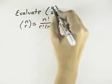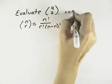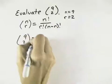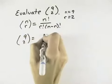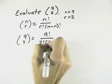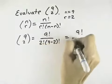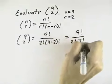So in this case, we can see n is 9 and r is 2. So if we want to evaluate 9 over 2, what we're going to have here is 9 factorial over 2 factorial times 9 minus 2 factorial. So that's 9 factorial over 2 factorial times 7 factorial.